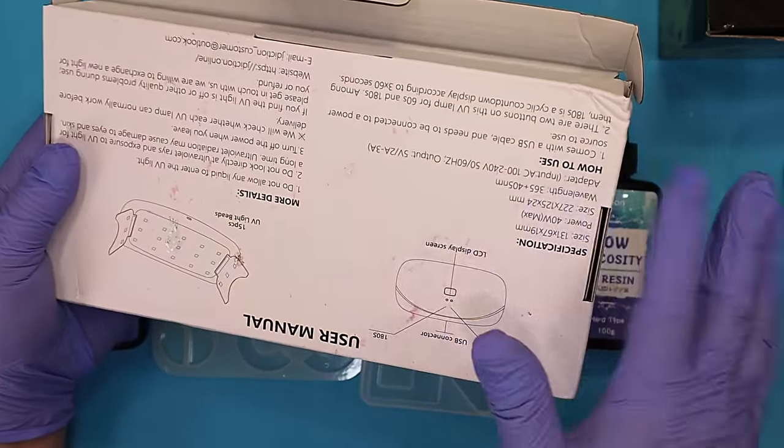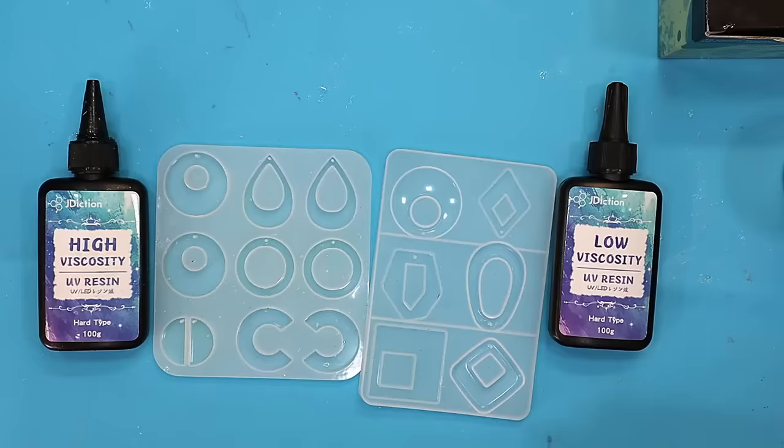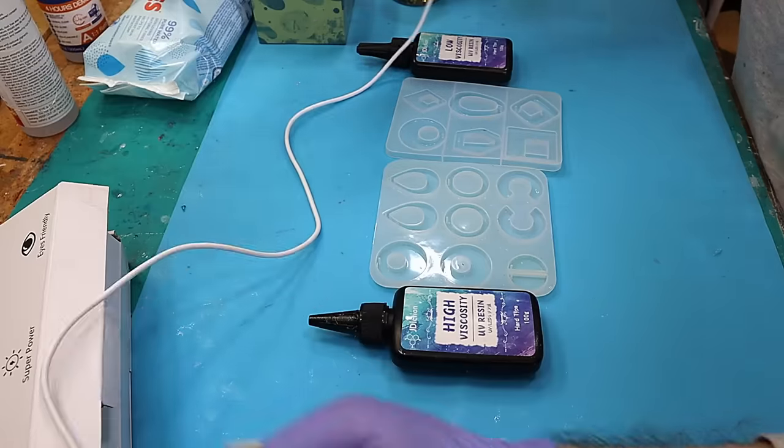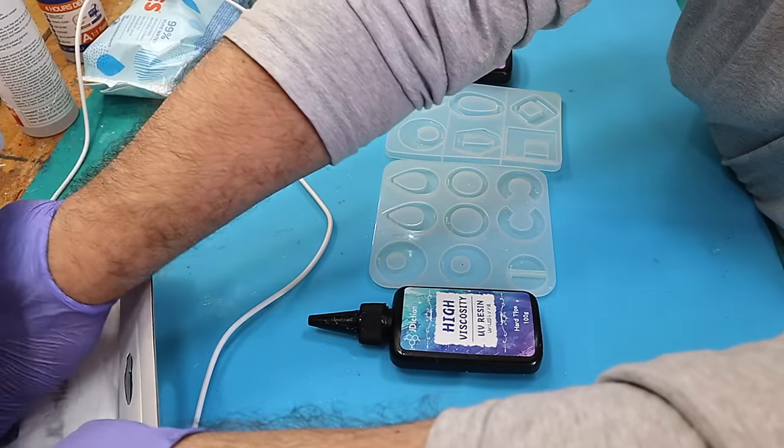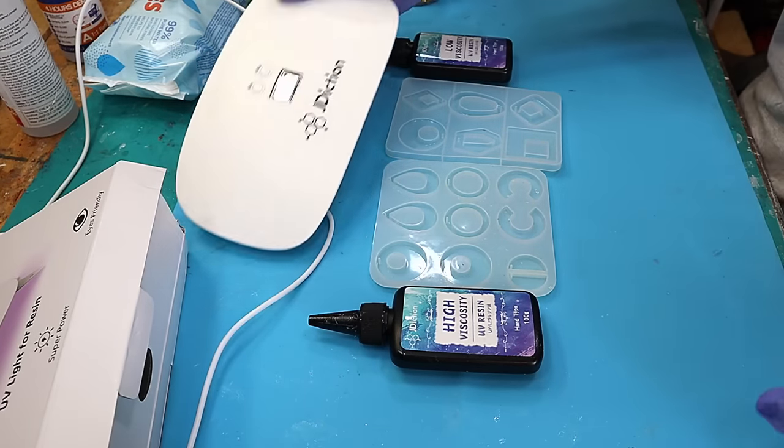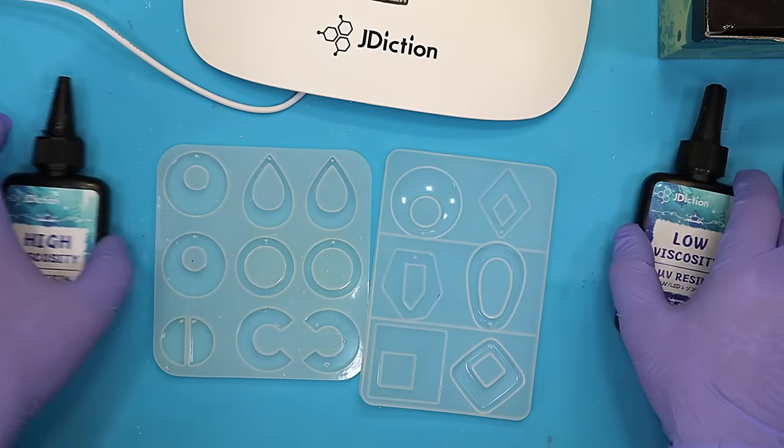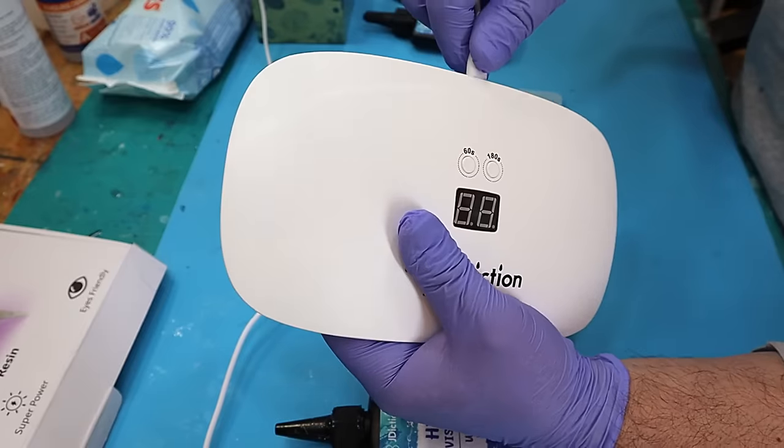There's full instructions on the back here. The cord that comes with it is actually a little bit longer as well than the cords that normally come with them, which is such a relief for me because I'm always having to move my resin about to match the length of my cord. And look how lovely it comes. It is a 60 second or 180 seconds, so three minutes cure time, and it's USB controlled.